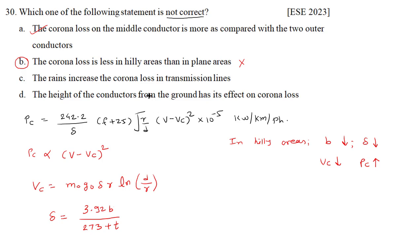So corona loss in hilly areas is more compared to plain areas — option B is not the correct statement, so the answer is option B. Regarding rain: rain increases corona loss because humidity increases ionization, reducing Vc and increasing corona loss. The height of conductors from the ground also affects corona loss. So the correct option is B.